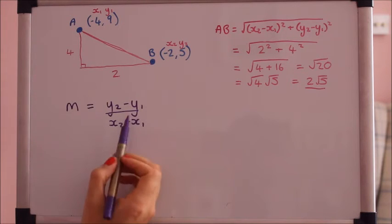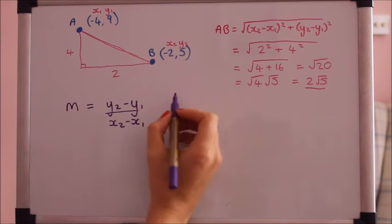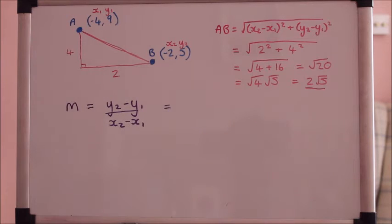So it's the difference in the y's divided by the difference in the x's. We've already got the difference in the y's that's 4 and the difference in the x's is 2. So it will be 4 divided by 2 which is 2.